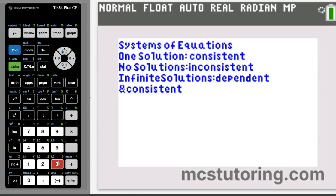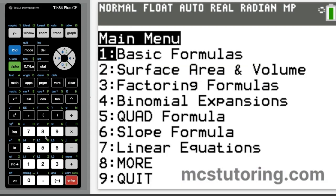And then we have our system of equations. So this is more of a definition thing. If it has one solution, it's consistent. No solutions, it's inconsistent. And then infinite solutions, it's dependent and consistent.